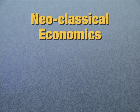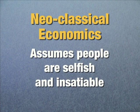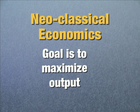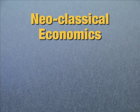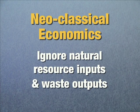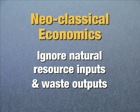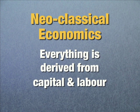In neoclassical economics, it assumes that people are rational, they're selfish, they're in their own self-interest, and they're insatiable — we always want more. So the goal of neoclassical economics is to maximize the monetary value of economic output, which also means maximizing economic output. Most neoclassical economists really ignore natural resource inputs and waste outputs, and they pretty much ignore the benefits we get for free from healthy ecosystems. They essentially assume that all production comes from just capital and labor — the machines we make and our hard work.